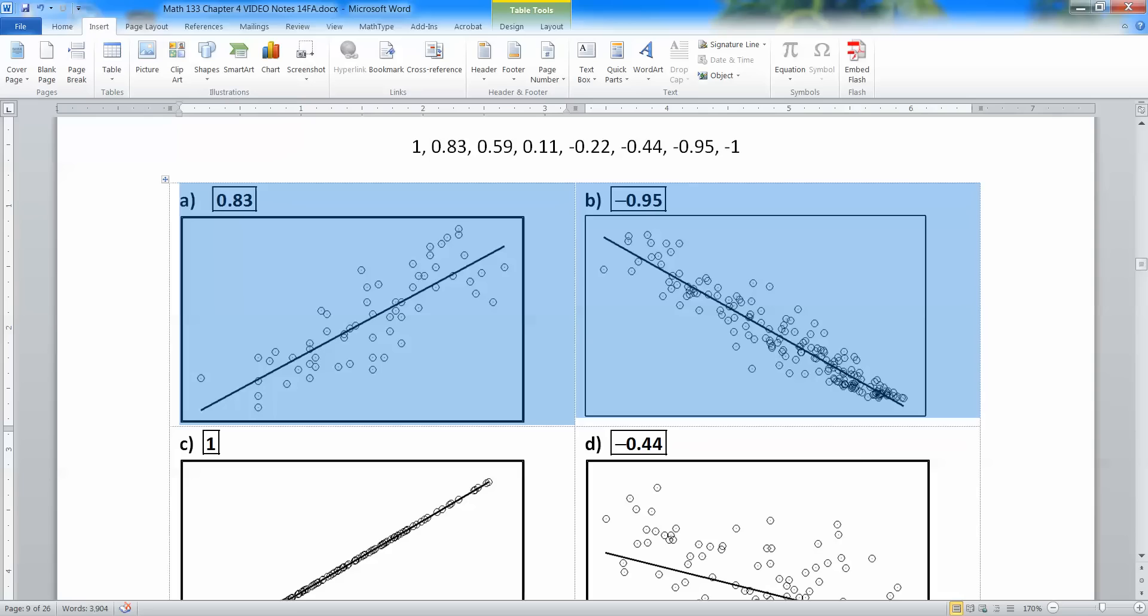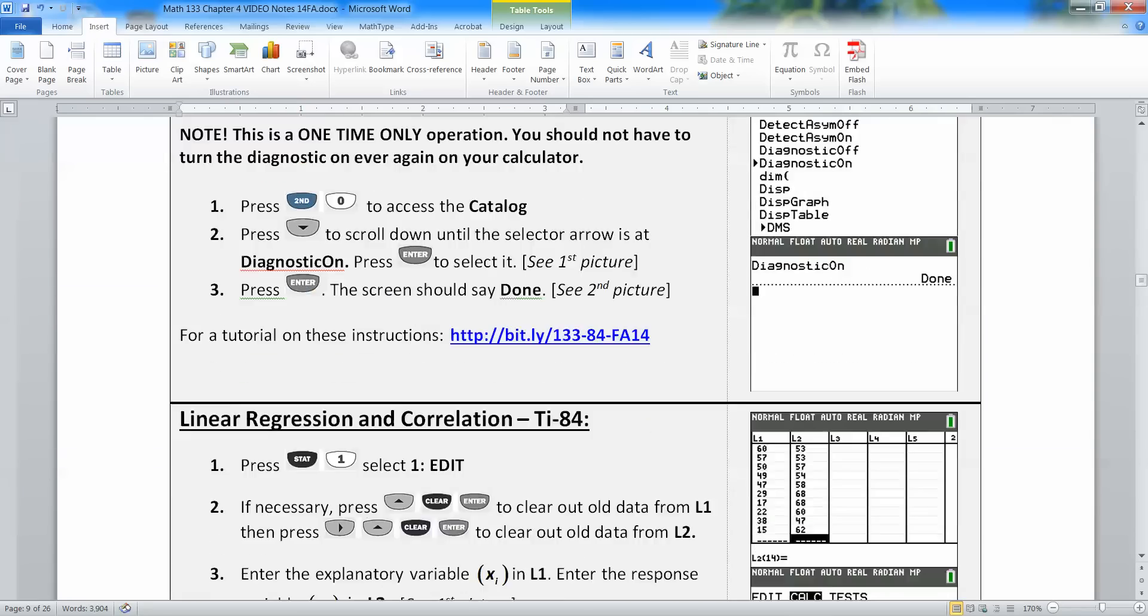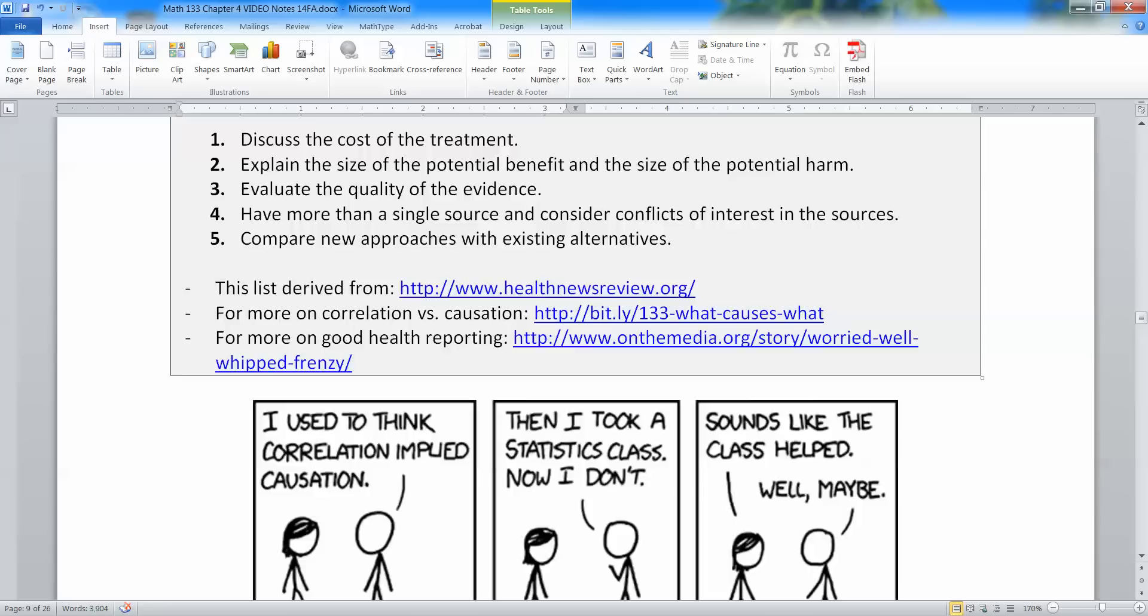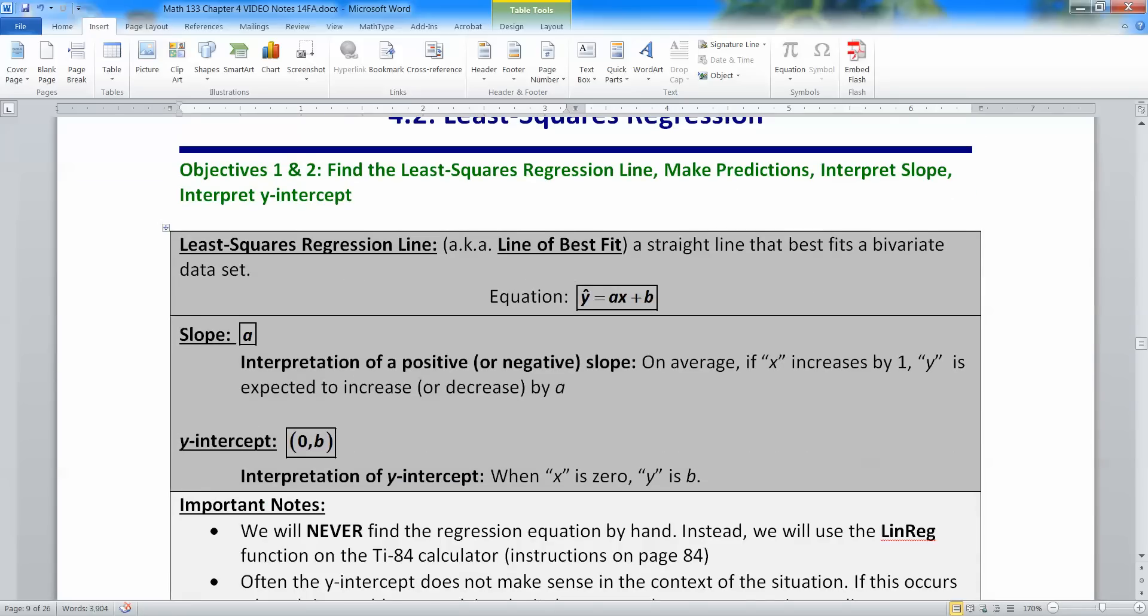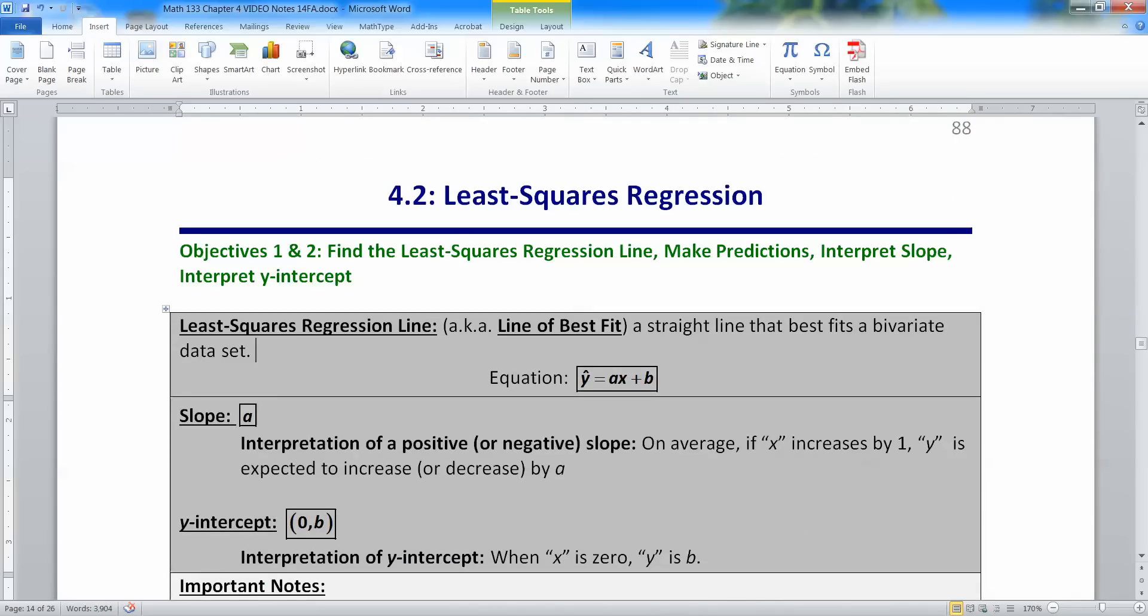It's called the line of best fit, or the linear regression line. Basically the points regress to this mean, this line in the middle. And we want to be able to find the equation for it. And that's what we're going to do in 4.2. So let's look here. So we have the equation of the regression line. It's called the least squares regression line, the line of best fit, the linear regression line. It's called a lot of different things for our purposes.